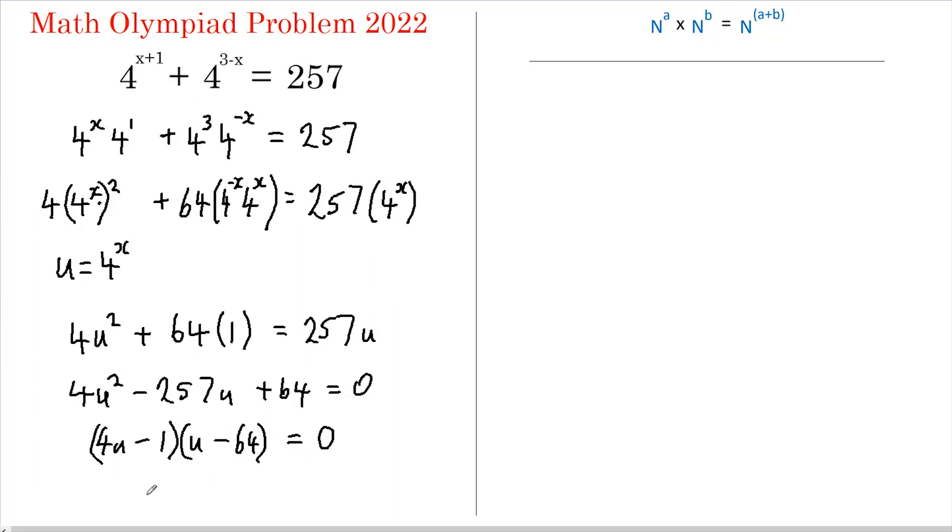Let's see if that works. 4u squared, negative 256u, negative 1u, so that's negative 257 in total and negative 1 times negative 64 is plus 64. So yes, we're good.